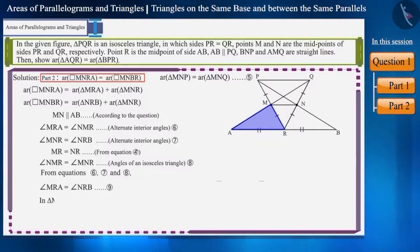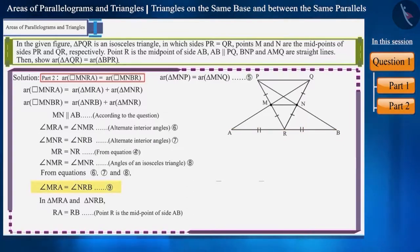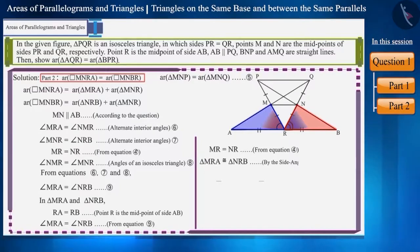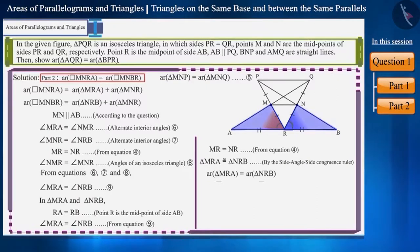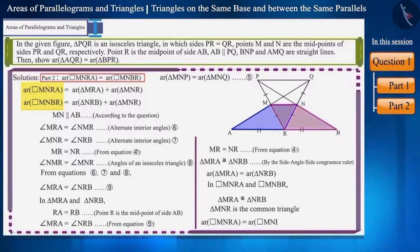Now look at triangles MRA and NRB. It's given that point R is the midpoint of side AB, therefore side RA and side RB are equal. We saw that angle MRA and angle NRB are equal, and sides MR and NR are also equal. Therefore, triangle MRA and triangle NRB are congruent by the side-angle-side congruence rule, and the area of congruent triangles is equal. In these two quadrilaterals, the area of these two extra triangles is equal, and triangle MNR is common. Therefore, the areas of these two quadrilaterals are equal.